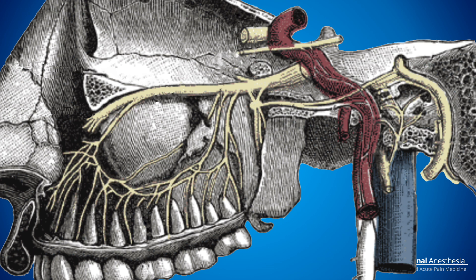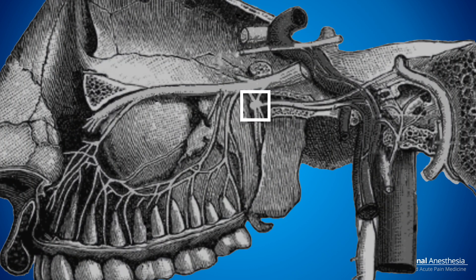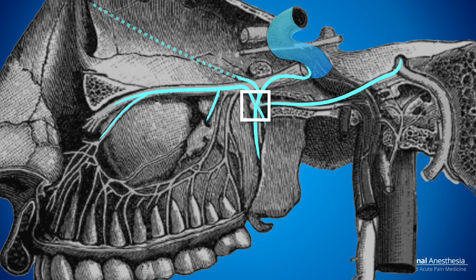The neuroanatomy of the SPG is complex, but here are the basics. The main function of the SPG is as a relay station for pre-ganglionic parasympathetic fibers that come from the facial nerve, cranial nerve 7. They run through the pterygoid canal to synapse at the SPG. Post-ganglionic fibers then hitchhike along the ophthalmic and maxillary divisions of the trigeminal nerve to provide secretomotor input to the lacrimal gland and the mucosa of the nose, mouth, and pharynx. The SPG has been called the hay fever ganglion because stimulation makes your eyes water and your nose run. Importantly, the SPG also sends branches to the meningeal and cerebral blood vessels — key to understanding the mechanism of SPG block for headache.